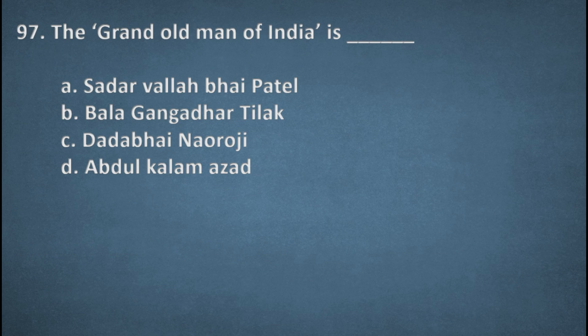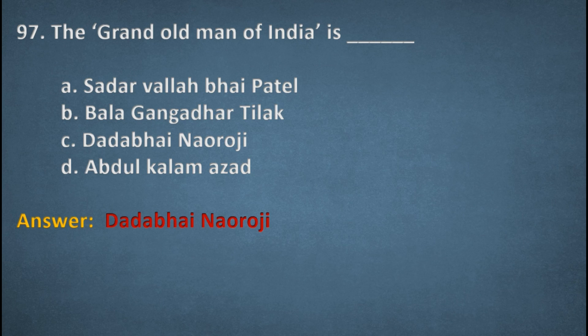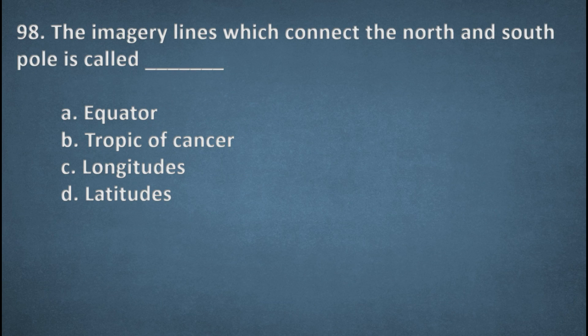Next one. The grand old man of India is. Options: Sardar Vallabhbhai Patel, Bal Gangadhar Tilak, Dadabhai Naoroji, Abdul Kalam Azad. The right option, C, Dadabhai Naoroji. Next one. The imaginary lines which connect the north and south pole is called. Options: Equator, Tropic of cancer, Longitudes, Latitudes. The right option, C, Longitudes.